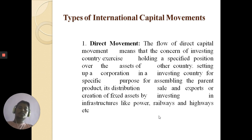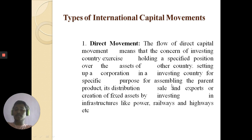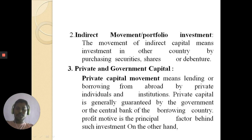International capital movement takes place in different forms, known as types of international capital movements. The first type is direct capital movement. Direct capital movement means the investing country exercises control or holds a specified position over the assets of another country — for setting up a corporation, assembling the parent product, distribution, sale, export, or creating fixed assets by investing in infrastructure like power, railways, and highways.